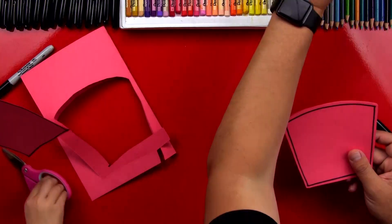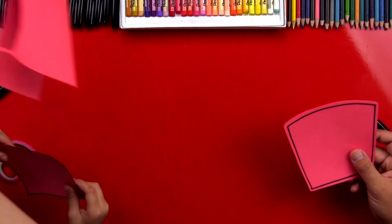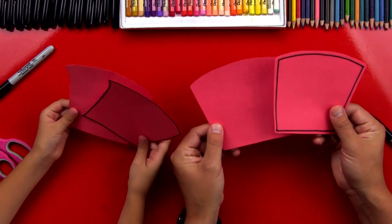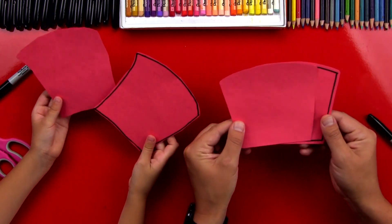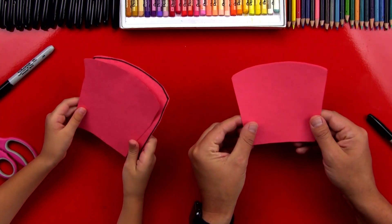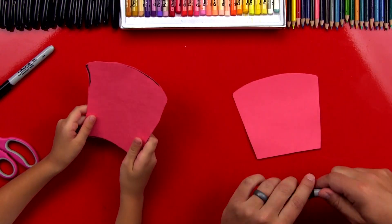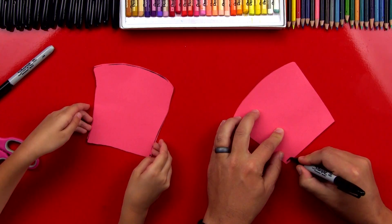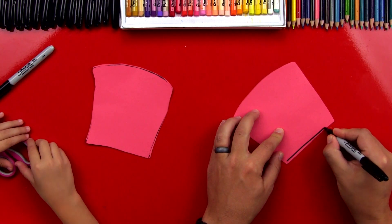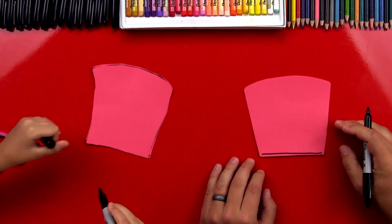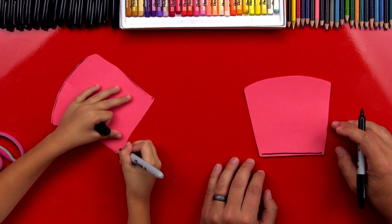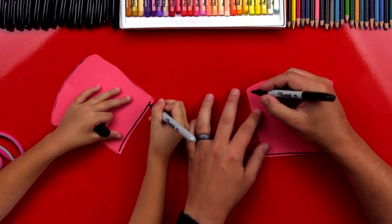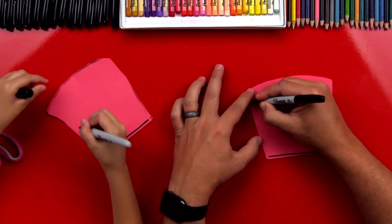Now we can put the scratch paper off to the side. We can save that for later for a different project. Now we're going to take our two pieces of red paper and we're going to switch them. We'll put the back one on the front, just like that. Now we're going to use our markers again. We're going to draw the bottom.